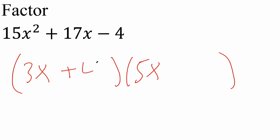Now let's try something different: a plus 4 here and a negative 1 here. The reason I think this is going to be it is because 4 times 5 is 20, very close to 17, and 3 times negative 1 is negative 3. Let's check: 3x times negative 1 is negative 3x, and 5x times 4 is 20x. 20x minus 3x is in fact 17x, so this right here is the correct answer.